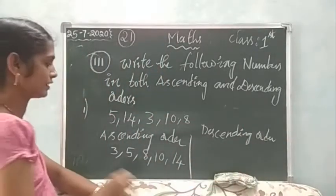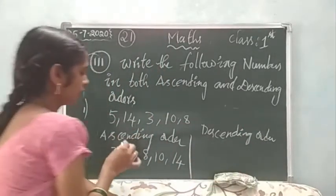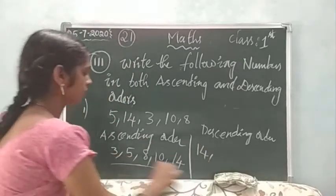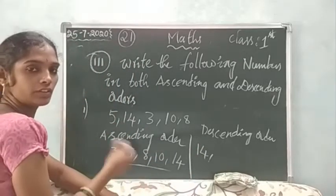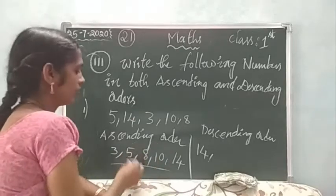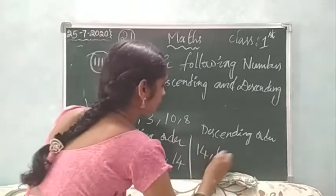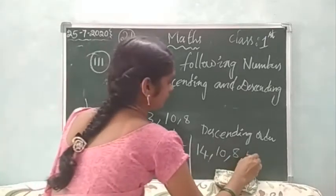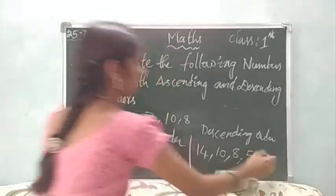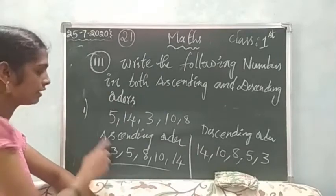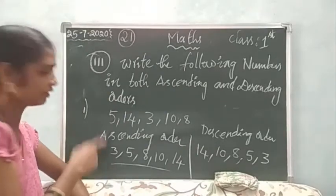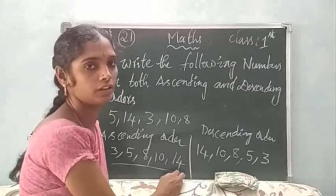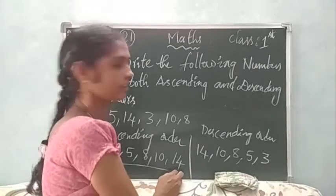The highest number of these numbers is 14, then in reverse — the reverse of the numbers is descending order. The next highest number is 10, then 8, and 5 is the smallest number. How do you understand? This is the descending order, then I can arrange it — this is the descending order. Okay, do you understand? Okay.